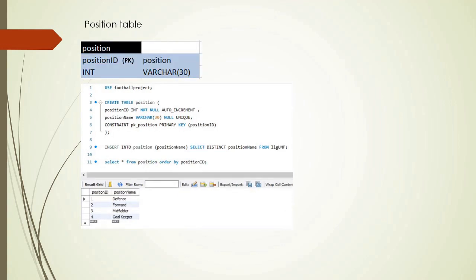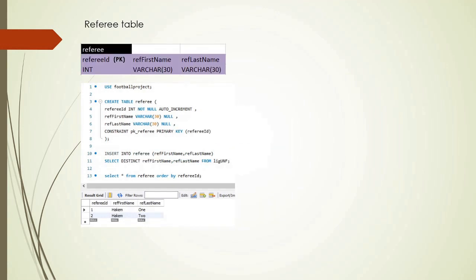The second table is the position table. It gives information about player positions and has two attributes like the country table, with position ID as the primary key. The third table is the referee table. It contains information about football referees, has three attributes, and referee ID is the primary key.